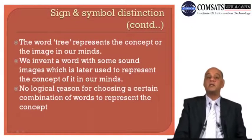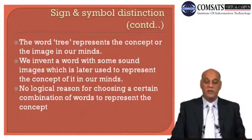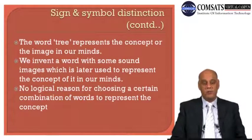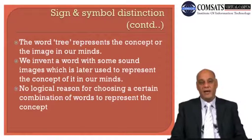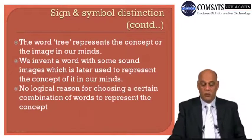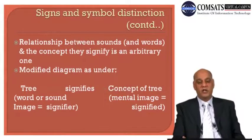There is no logical reason for choosing a certain combination of letters. We chose T-R-E-E — was there any scientific relationship with the object? No. There is no logical relationship between the combination T-R-E-E and the actual object. The relationship between sounds, words, and the concepts they signify is an arbitrary one. It becomes conventional and the relationship is just arbitrary — there is no scientific reason behind choosing a certain word for a certain object.